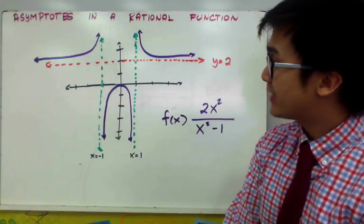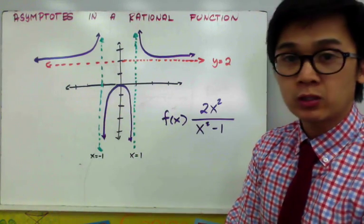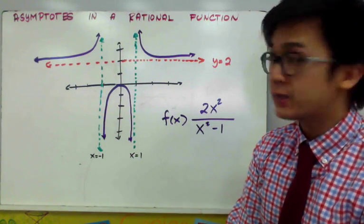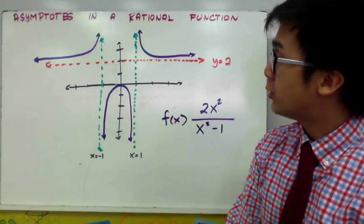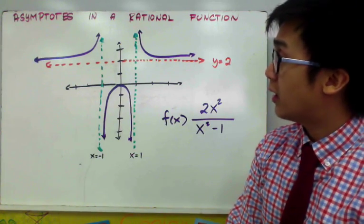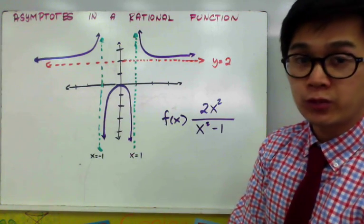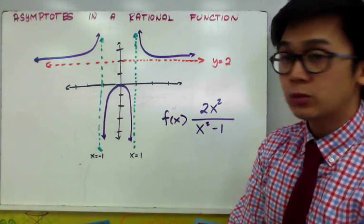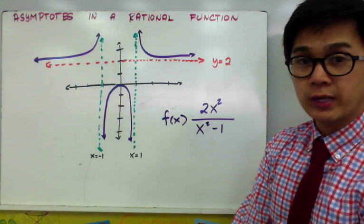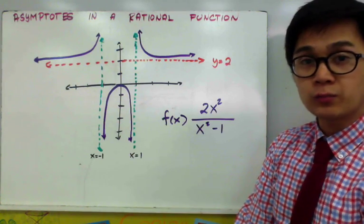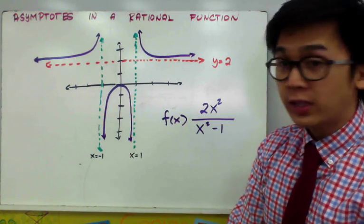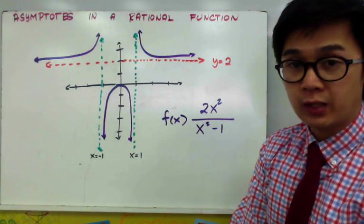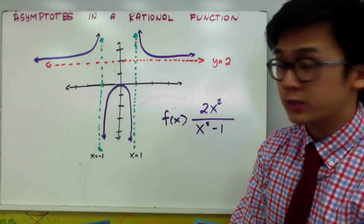The first step that we need to learn in finding or graphing a rational function is being able to draw the asymptotes of our rational function. We're going to find ways on how to find asymptotes of a given rational function.